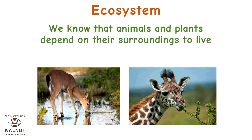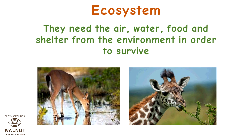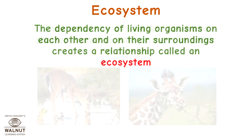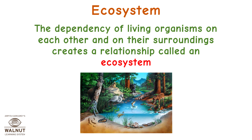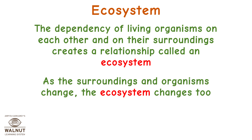Ecosystem. We know that animals and plants depend on their surroundings to live. They need the air, water, food, and shelter from the environment in order to survive. The dependency of living organisms on each other and on their surroundings creates a relationship called an ecosystem. As the surroundings and organisms change, the ecosystem changes too.